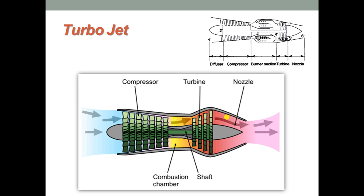The first one is the turbo jet. The line diagram represents the construction of a turbo jet. The figure shows a turbo jet — it consists of a diffuser at the entrance. In the front of this turbo jet, we have a diffuser which slows down the air entering at a velocity equal to the aircraft speed.